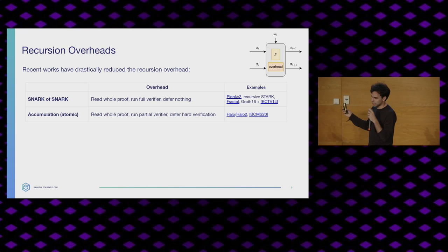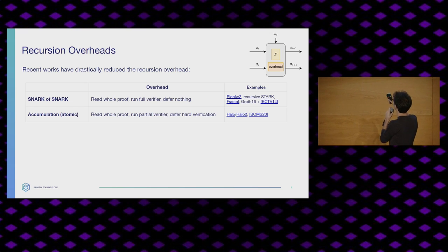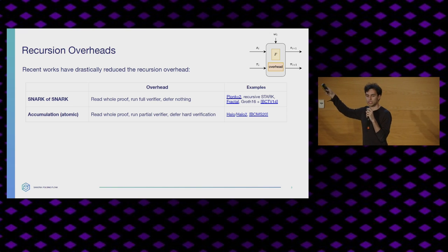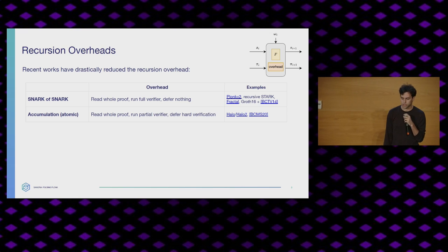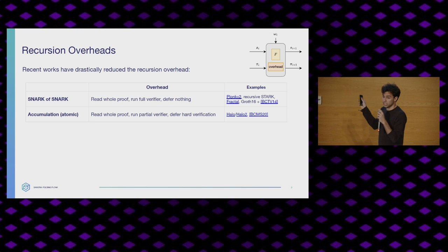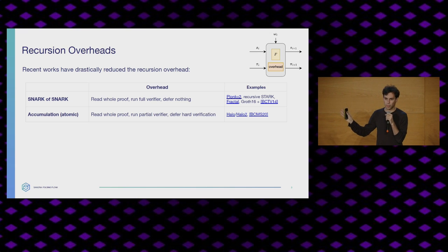Can we do better? Yes. The people working on Halo came up with accumulation: they realized that a verifier could be split into an easy part and a hard part. What we do at each step is read the whole proof but only run the easy part of the verifier. The hard part gets accumulated and deferred until the very end, and we only do it once. That's what you see in Halo, Halo 2, and the paper called Proof Carrying Data. This is substantially better — Halo's original version works with Sonic, about 100,000 constraints.